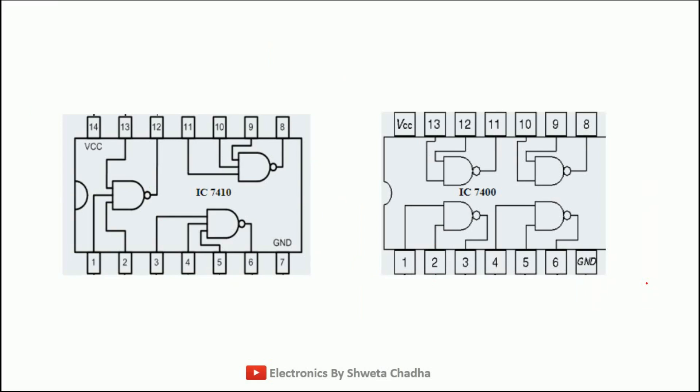This is what we need to verify with the help of the JK flip-flop experiment. For the pin diagram requirement, we require 2 ICs for the explanation of the JK flip-flop experiment. One is IC number 7410, which is a 3-input NAND gate, and the second one is IC number 7400, which is a 2-input NAND gate.